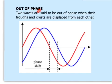Out of phase. Two waves are said to be out of phase when their troughs and crests are displaced from each other.